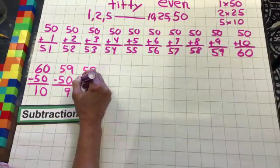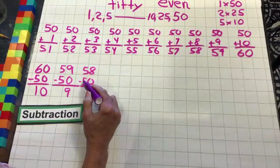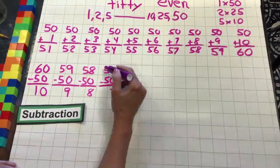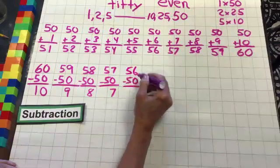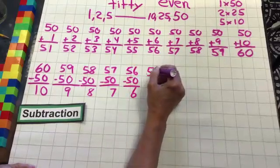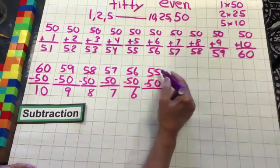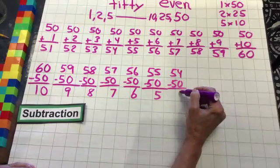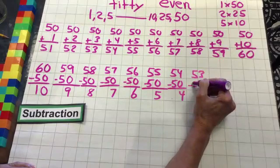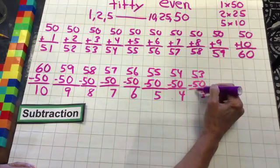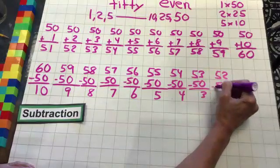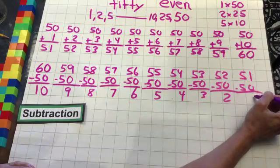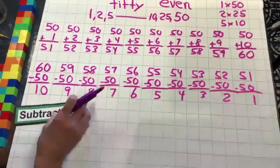Now for subtraction: 56 minus 50, 55 minus 50, 54 minus 50, 52 minus 50 is nothing. 51 minus 50: 1 minus 0 is 1, 5 minus 5 is 0. Boom. We're done with subtraction and addition. I'm sure you just whipped through this.